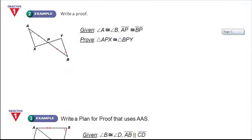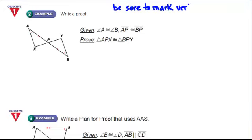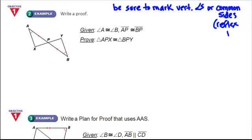For proofs, the only reasons you can add your own markings are vertical angles or common sides — so be sure to look for those. If you have a common side, we use the reflexive property. Vertical angles are always congruent. Make sure you're always looking for three congruent pieces.